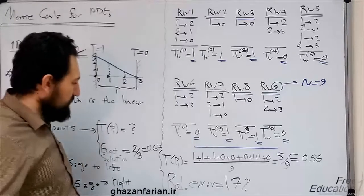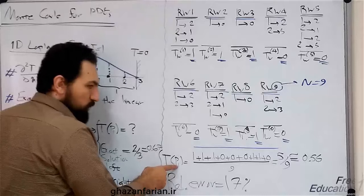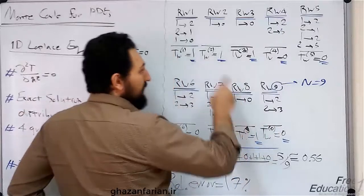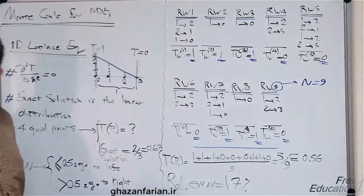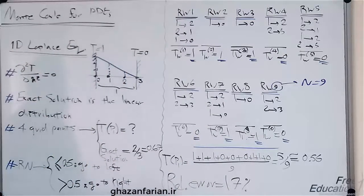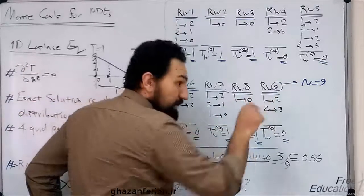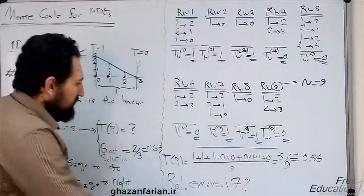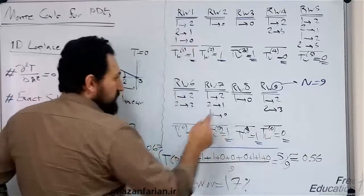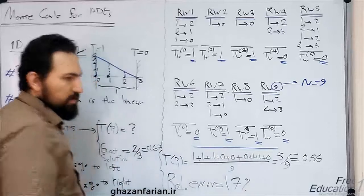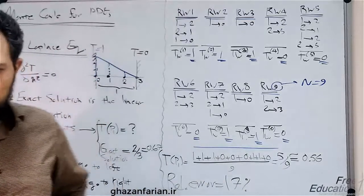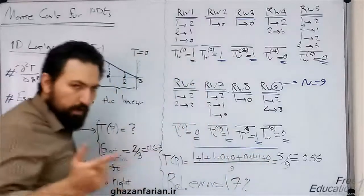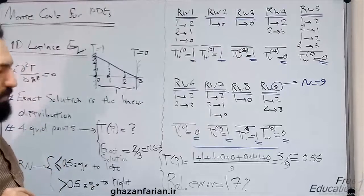The third step is to compute the temperature of point P1. The temperature is the sum of all wall temperatures at the end of each random walk, divided by the number of random walks. With nine random walks, the denominator is 9. The numerator is the sum of the recorded wall temperatures — 1, 1, 1, 0, 0, 0, 1, 1, 0 — which equals 5. So the estimated temperature of P1 is 5/9, approximately 0.56.